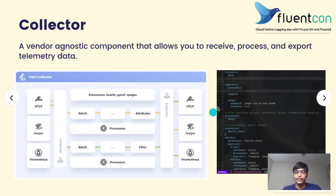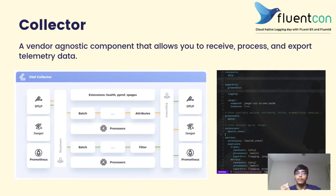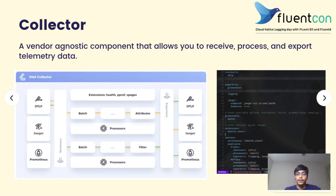We can also look at the config file. We first define all the components that we have: various receivers, exporters, processors, and extensions, and then we define the pipelines that we want. For the traces pipeline, I am receiving the telemetry data using the OTLP protocol, passing it through the batch processor, and from there sending it to the logging and Jaeger exporters. The logging exporter will log the data to the console, while the Jaeger exporter will export it to the Jaeger backend. Similarly, for metrics we do the same thing, but instead of sending it to Jaeger — because Jaeger does not support metrics — we use Prometheus, so the metrics are sent to a Prometheus backend.